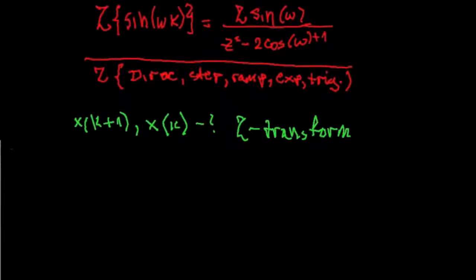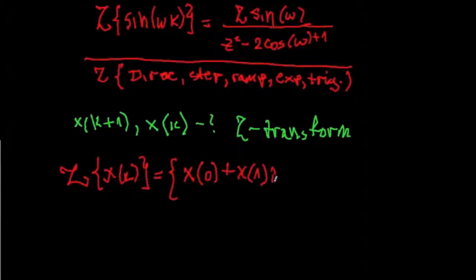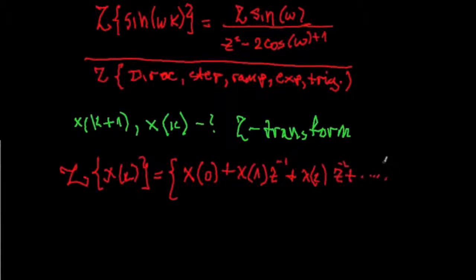In the same way, let's take the Z-transform of the following signal. We do Z{x(k)}, and we know the Z-transform is just the series: x(0) plus x(1)·z^(-1) plus x(2)·z^(-2) plus and so on. In other words, this is just X(z).